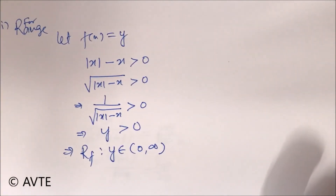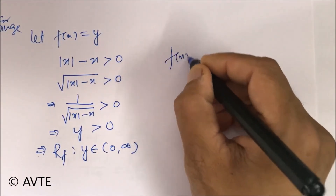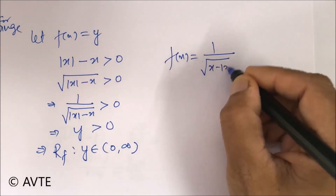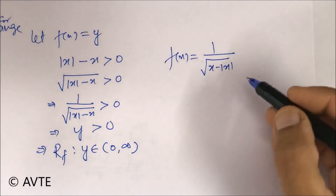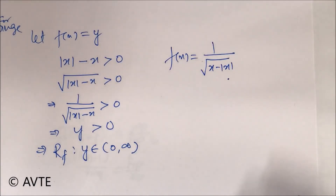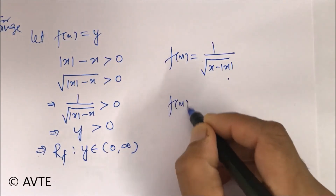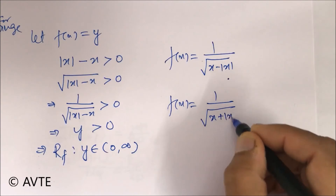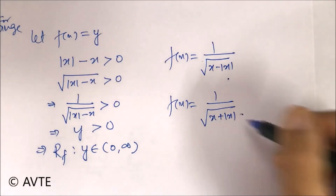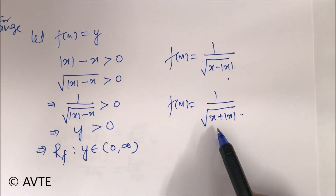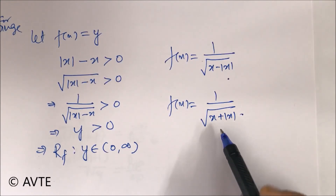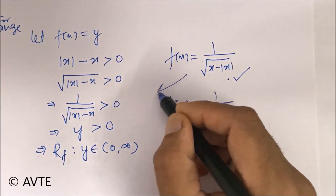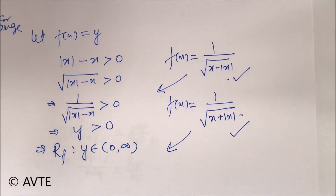Now you can try two similar questions. The answer to the first is that domain and range is not possible. And for the second, the domain is the set of positive numbers and range is also positive. Kindly try these two questions using the given question as a guide. Thank you very much.